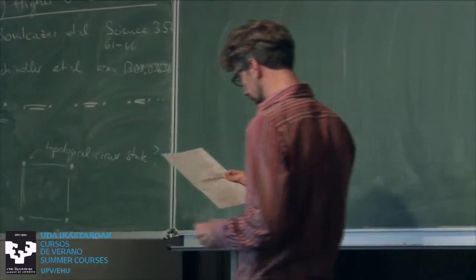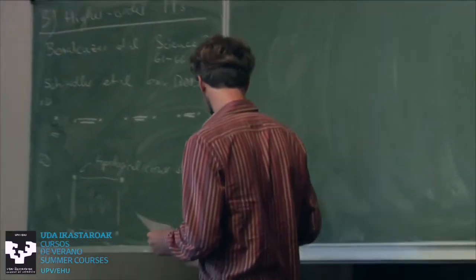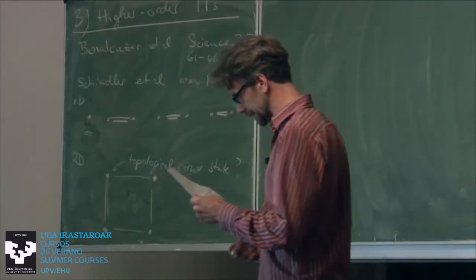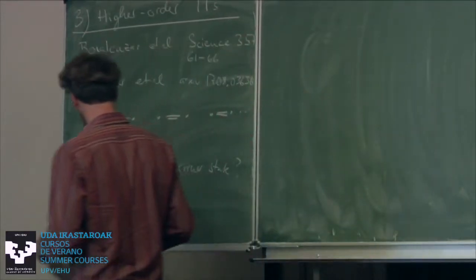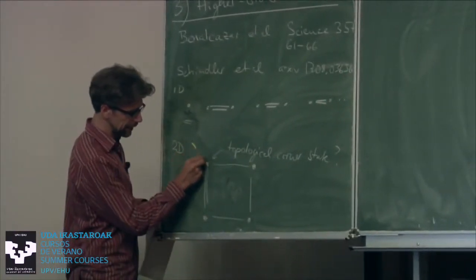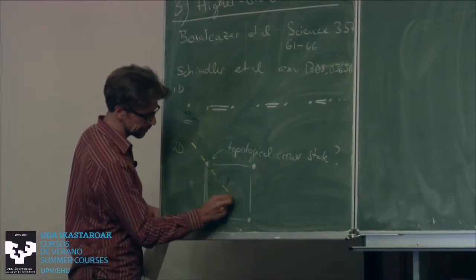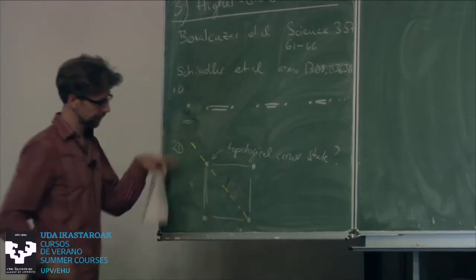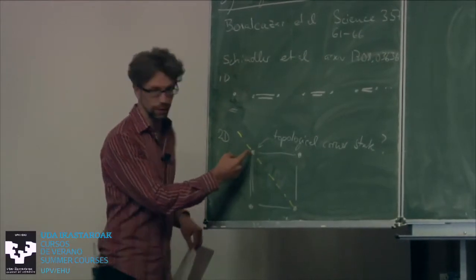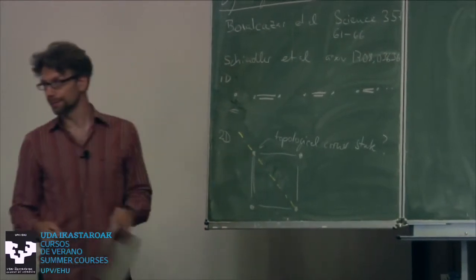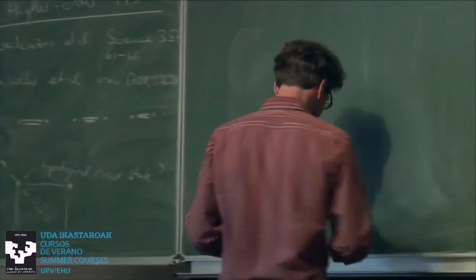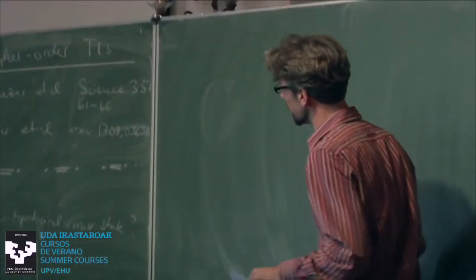This corner mode is protected by a non-local symmetry — specifically, the mirror symmetry given by the mirror reflection that passes through the corner. Let's think about the dimerization picture from the SSH model and see whether we can extend it to 2D.